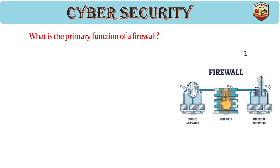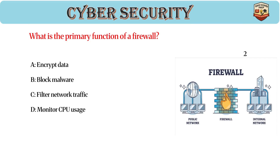What is the primary function of a firewall? Answer: C, filter network traffic. Firewalls control traffic between networks, blocking unauthorized access. Rules are based on IP, port, and protocol.